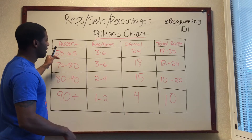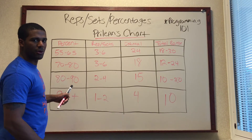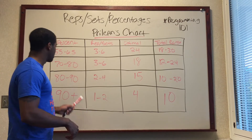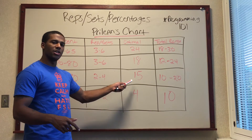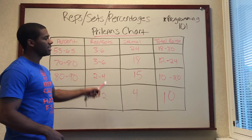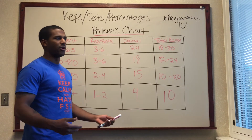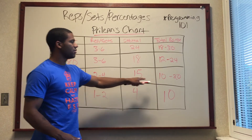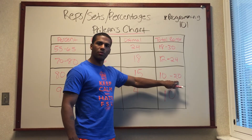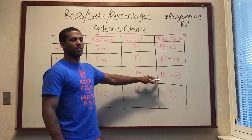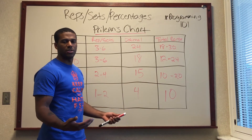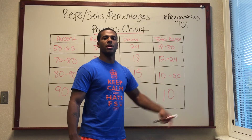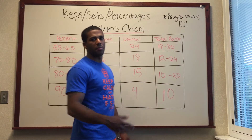This chart is telling you how to set up your workouts. So maybe on Monday you want to do squats and go heavy — you come down to 80 to 90%, and your optimal is 15 reps, so you do three sets of five, or four sets of four. The total range is 10 to 20, so you don't have to hit exactly 15, but you don't want to go over 20. If you go under 10, you're not getting enough stress on the muscle for that percentage.